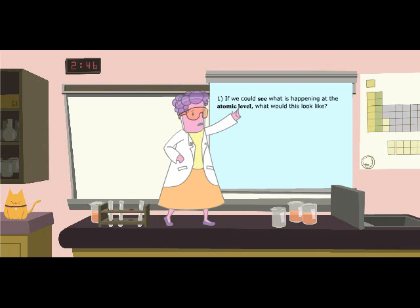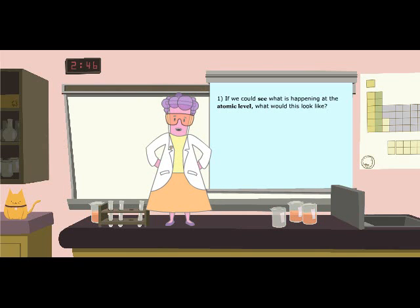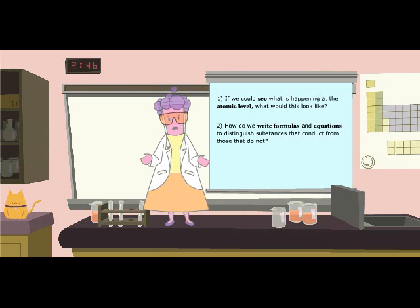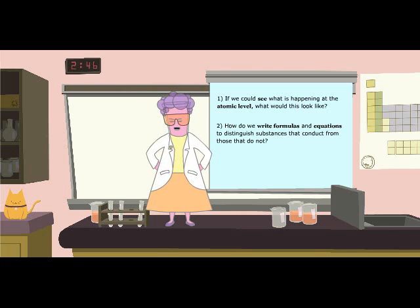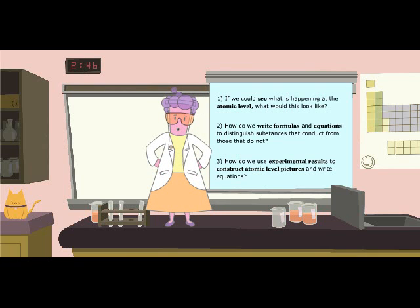If we could see what's happening at the atomic level, what would it look like? How do we write formulas and equations to distinguish substances that conduct from those that do not? How do we use experimental results to construct atomic level pictures and write equations?